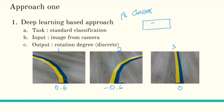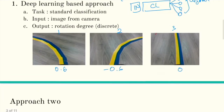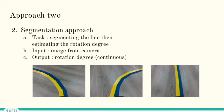We upload our classifier model with the input image and 18 output classes. We take the argmax to get the predicted class and make the robot rotate based on the predicted rotation degree class. This is Approach 1.